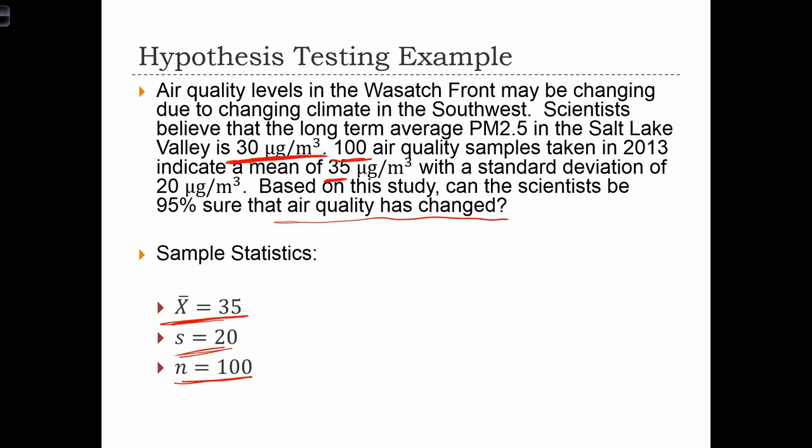So in other words, can we be 95% sure, based on the fact that the mean air quality that we collected was 35, can we be 95% sure that the average air quality in the valley is not 30? The sample mean is 35, but can we be sure that the population mean is not 30?